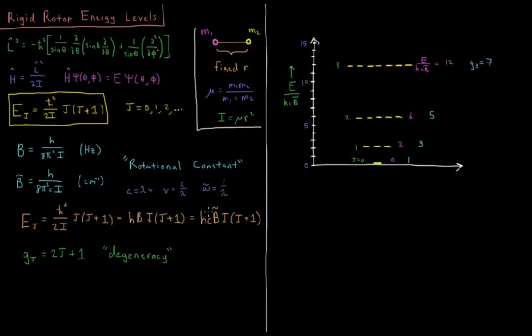And in terms of B bar, a unit that you'll see very frequently, depending on the professor you have, E sub j equals hc B bar j times j plus 1. Planck's constant, speed of light. And also note that the speed of light here is going to be in centimeters per second. So it's 3 times 10 to the 10th instead of 3 times 10 to the 8th that it would be for meters.